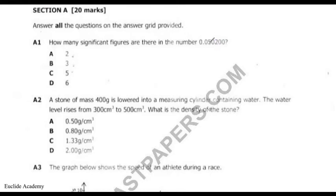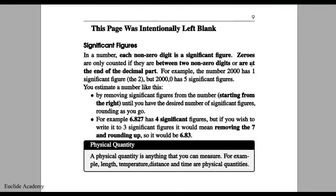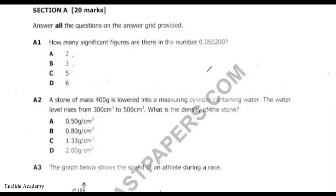Non-zero digits are significant, and zeros at the end of the decimal part are also significant. Counting through the number: one, two, three, four, five — that's five significant figures. So our answer is C: five significant figures.